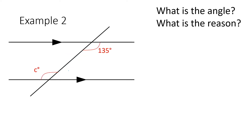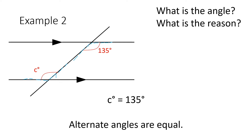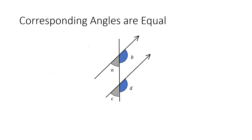Let's have a look at another example. What is the angle and what is the reason? If I draw my dotted line here, I can see the shape I create is a Z — a backwards Z. Therefore the interior angles on both sides are equal to 135. So C is equal to 135, and again the reason is because alternate angles are equal.